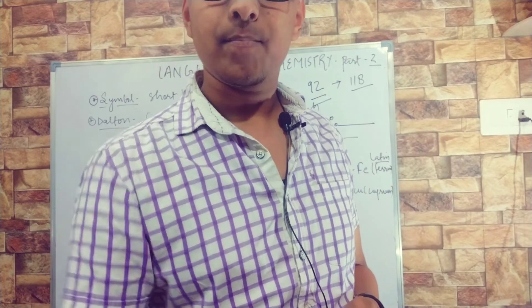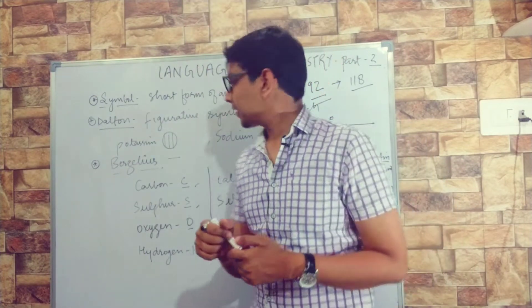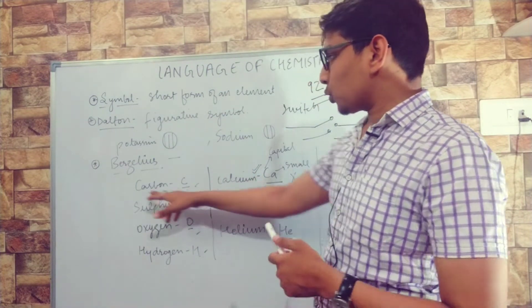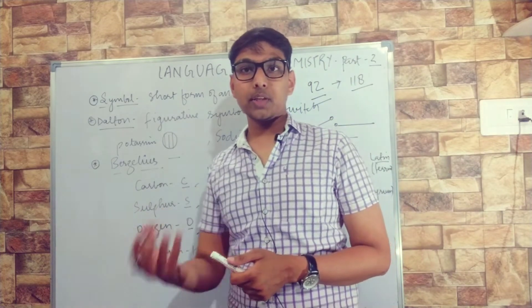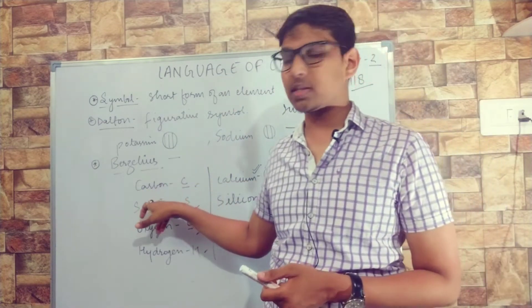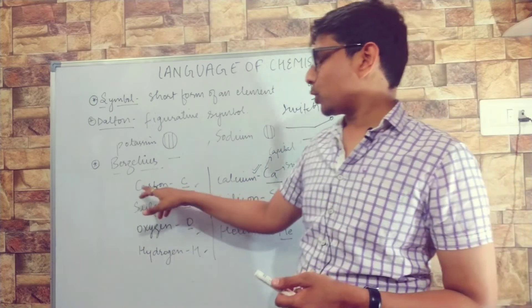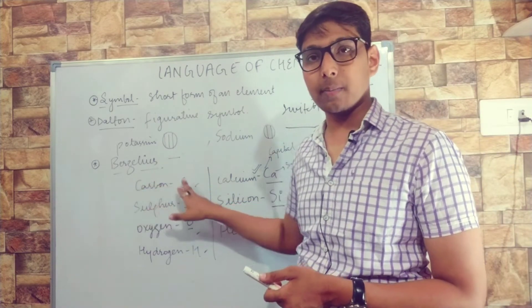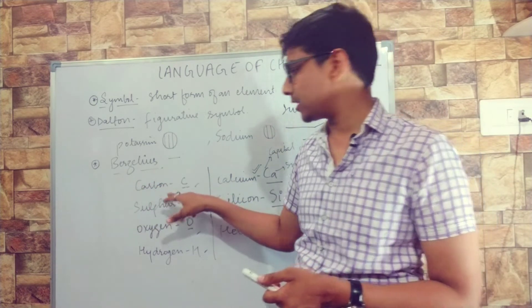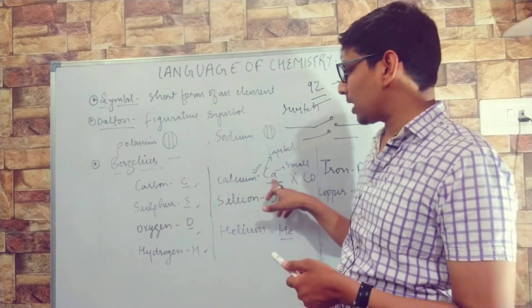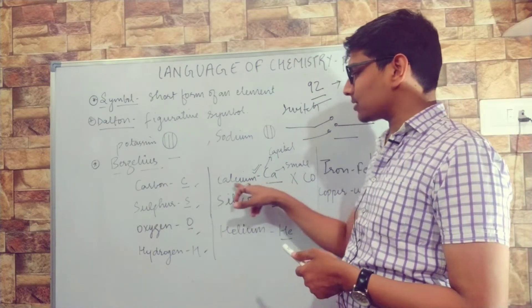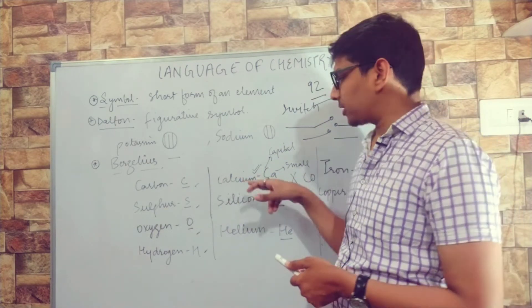But wait - if two elements or atoms start with the same letter, like carbon and calcium, both starting with C, what will happen? We have already written carbon's name with capital C, so for calcium we will use the first and second letters - the first two letters will be used in writing the symbol.